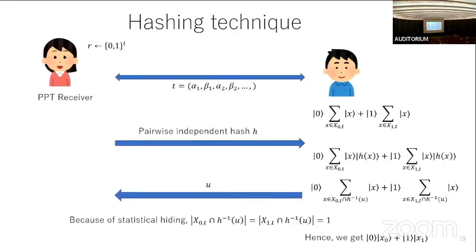The idea to solve this issue is a hash technique. After the interaction, the sender has this quantum state; our receiver sends a pairwise independent hash function h. The sender coherently computes h(x) and measures it. If the measurement result is u, the state after measurement is a superposition of all x that are random seeds corresponding to committed bit zero with transcript T and preimage of u — and similarly for bit one. By statistical hiding and techniques similar to Zhandry and Bejilani, we can show that with enough probability the size of this preimage set is actually equal to one.